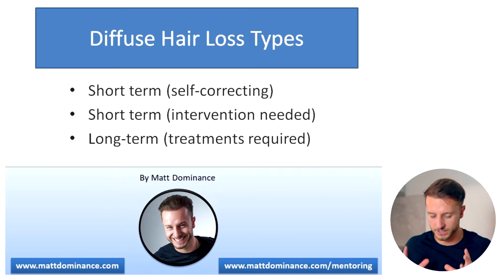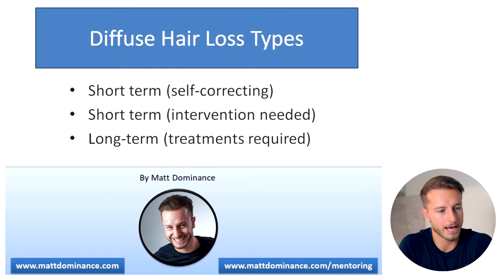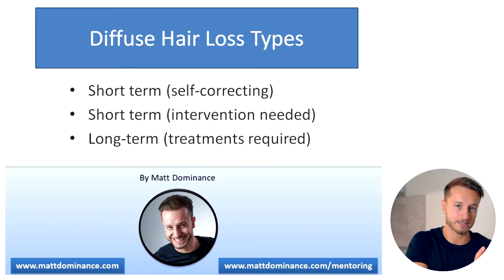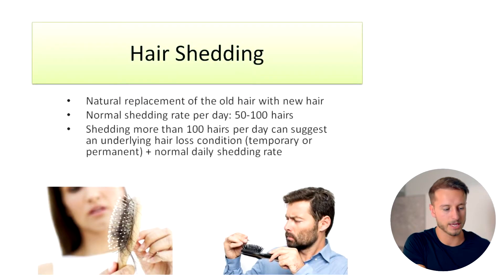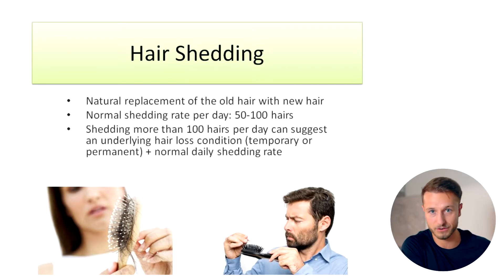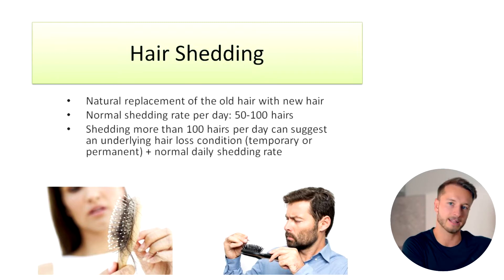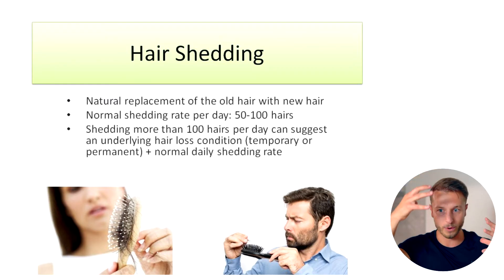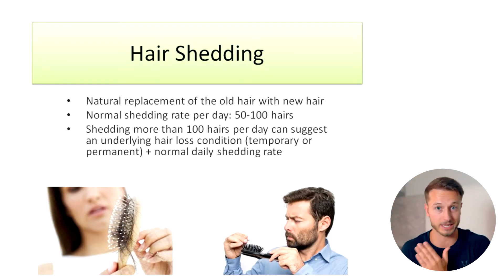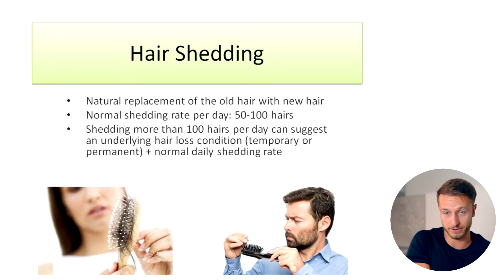Before I mention all three types of diffuse hair loss, I want to make a big distinction between diffuse hair loss as such and hair shedding. Hair shedding is a normal thing that happens with every human — everybody sheds about 50 to 100 hairs a day. That is not hair loss; it's just the normal shedding. There is always some hair on your scalp in the anagen growing phase, the telogen resting phase.